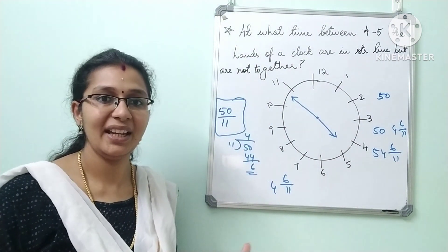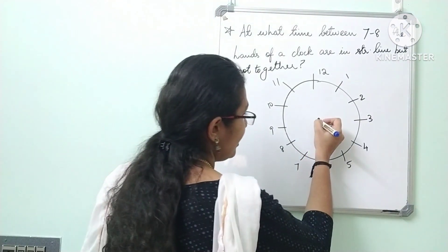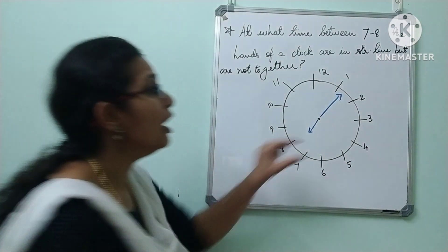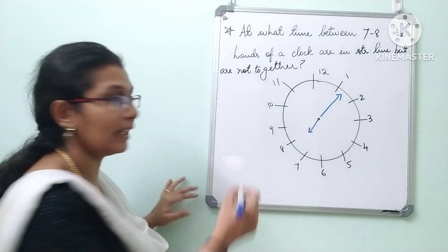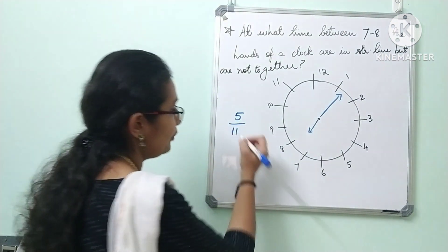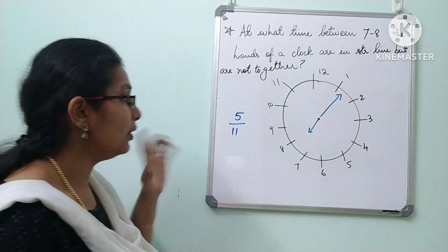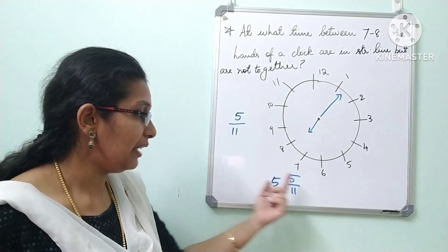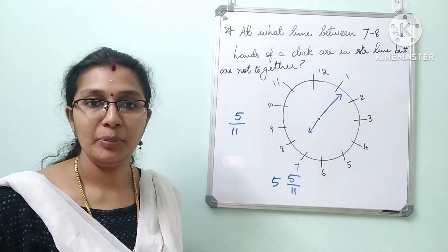We can see 7 to 8 using the shortcut. From 7 to 8, the hour hand is here and the minute hand is just opposite. Every minute covered — here is 5 minute spaces. How many minutes divided by 11? Divided by 11, we get 0 remainder 5. So we attach 5 by 11. That means 5/11 minutes past 7 is the opposite direction.